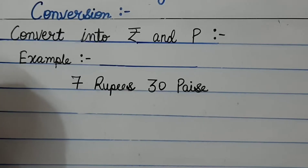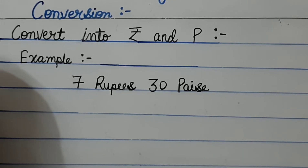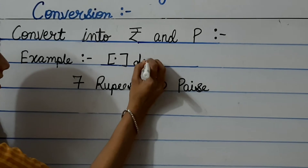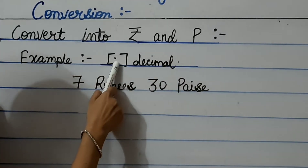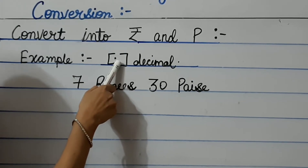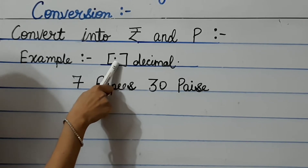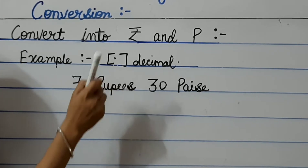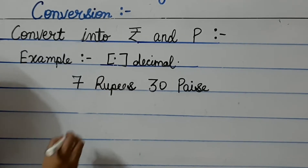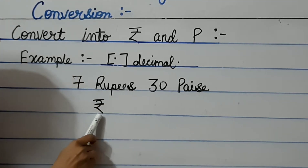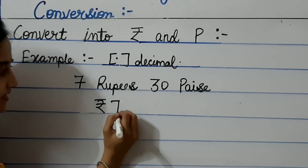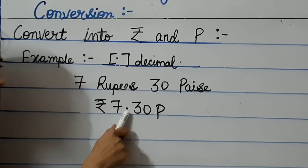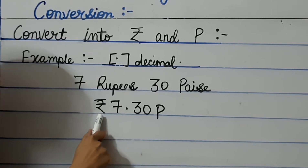Now look here children — convert into rupees and paise. When we write rupees and paise together, we put a dot sign. The dot here represents the decimal sign. It separates rupees from paise. For example, 7 rupees 30 paise will be written as ₹7.30 P — the dot separates the rupees from the paise.